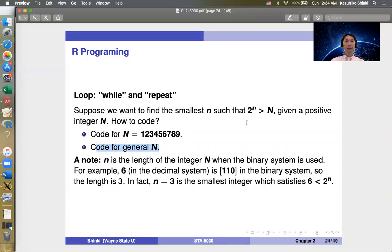Why do we want to get this lowercase n? Actually, lowercase n is the binary length. When capital N is given, lowercase n is the length of the binary expression of capital N. For example, 6 in the decimal system is 110 in binary. The first digit represents 1, second digit represents 2, and third digit represents 2². So 6 is 4 plus 2, which is 110. The length is 3. That number 3 is the smallest integer which satisfies 6 < 2^n. So n = 3 is the smallest number to satisfy this inequality.